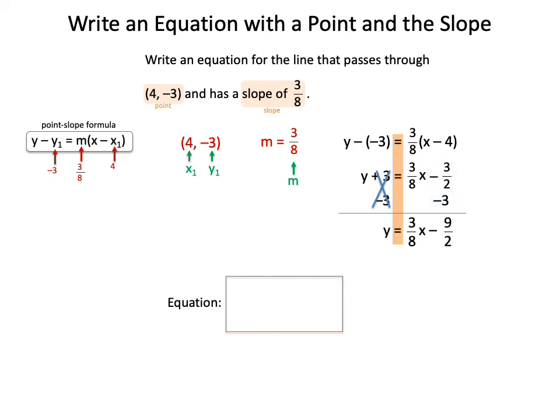So that will give us the final line of y equals 3/8 x minus 9/2, and that will be the equation that we would write for the line that passes through (4, -3) and has a slope of 3/8.